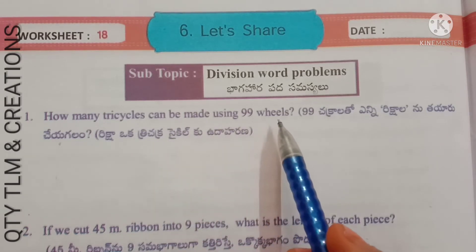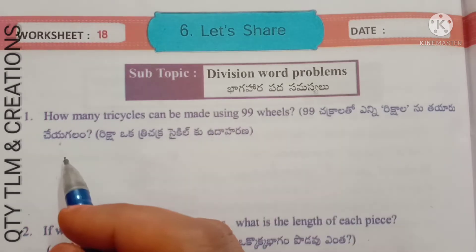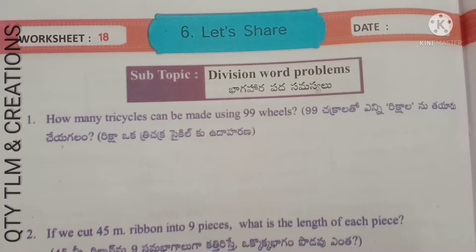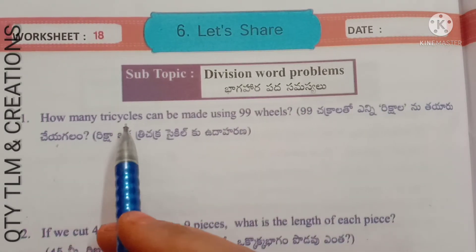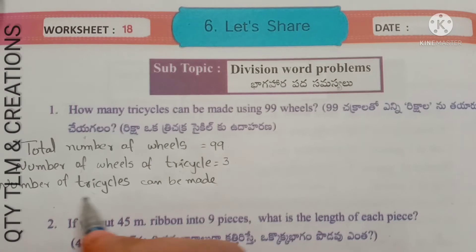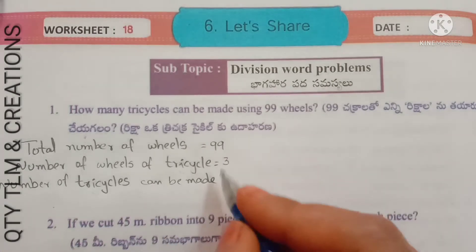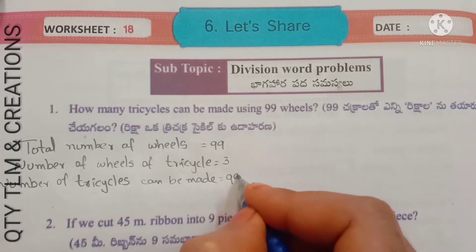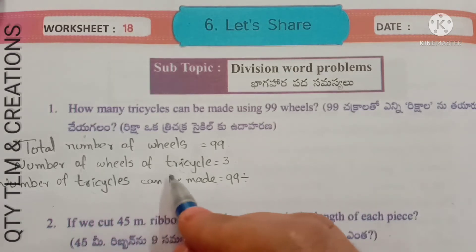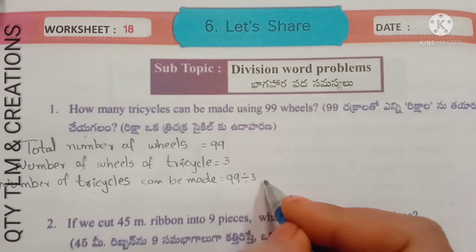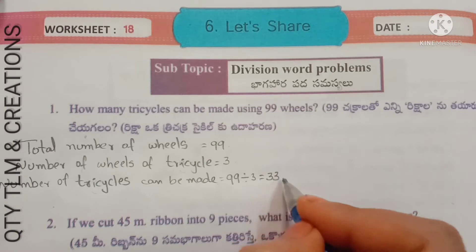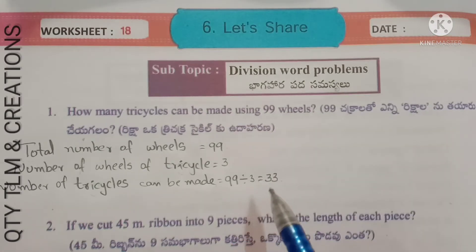Next, worksheet number 18, subtopic: division word problems. First question: how many tricycles can be made using 99 wheels? Total number of wheels = 99. Number of wheels per tricycle = 3. Number of tricycles = 99 divided by 3 = 33 tricycles can be made using 99 wheels.